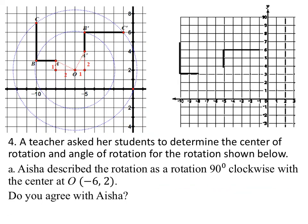A teacher asked a student to determine the center of rotation and angle of rotation for a shown rotation. Someone described it as a 90-degree clockwise rotation with the center at negative six, two. It looks like we're good on that because the points lie on a circle, meaning they are the same distance away from the center of rotation.